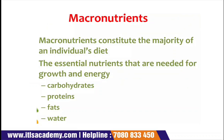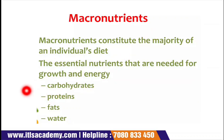Macronutrients consist of the majority of an individual's diet — they are the essential nutrients needed for growth and energy. Examples are carbohydrates, protein, fat, and water. These macronutrients are present in a very abundant form in every human body, and they are needed for proper growth, development, and energy.